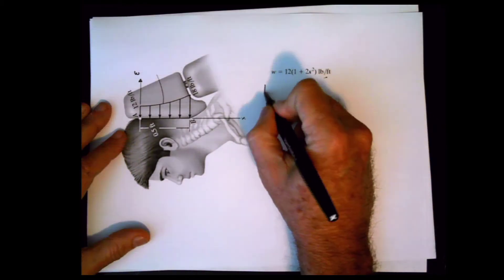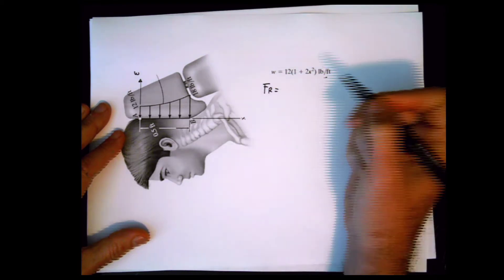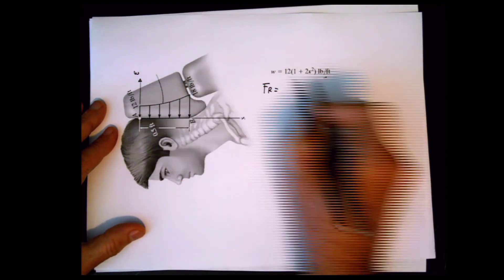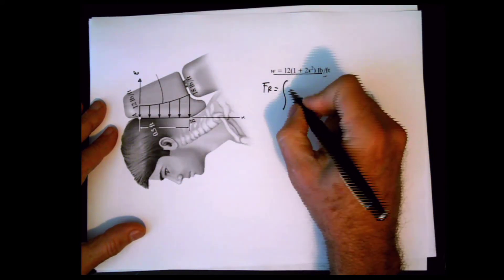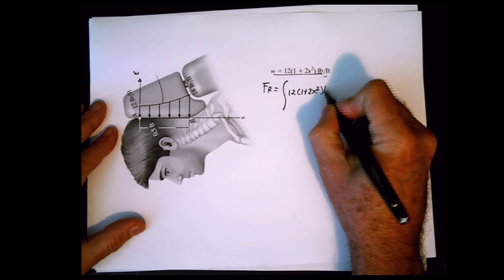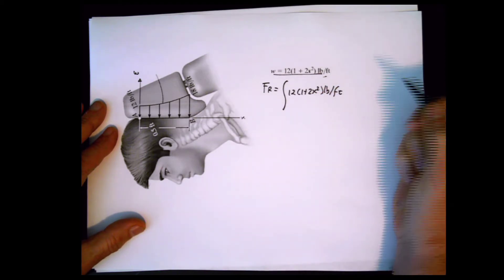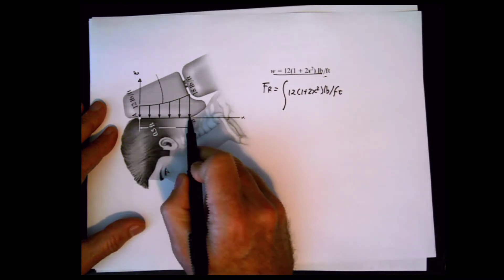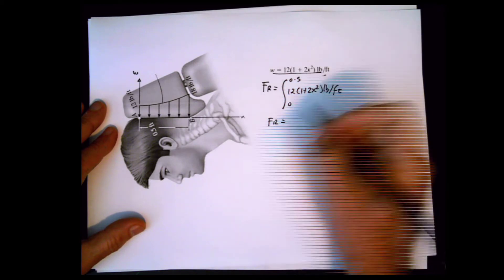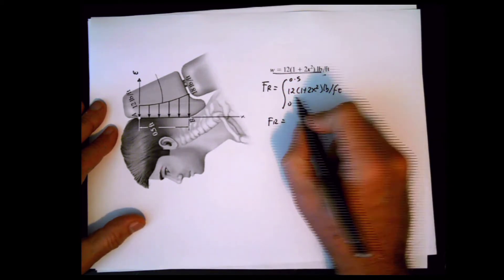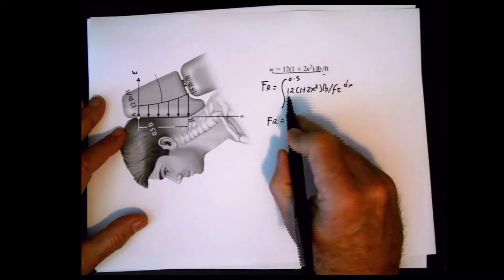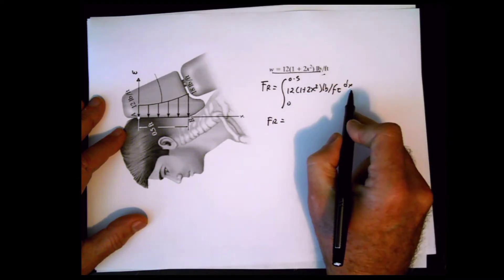If we want to calculate the resultant force, which is the first thing the problem asks, you just take the area of that shape. Because it follows that equation, the area is going to be the integral of that equation. The resultant force will be the integral of 12 times (1 plus 2x squared) dx — don't forget the dx — and integrating 12 gives 12x.